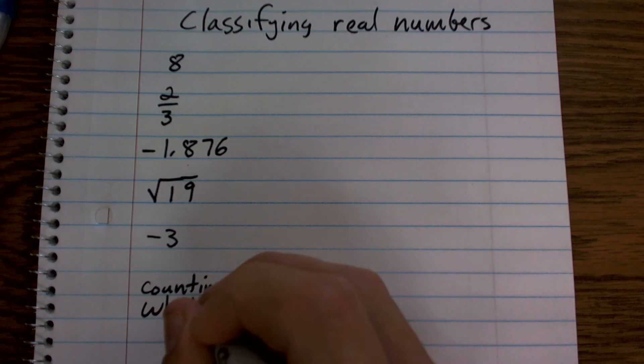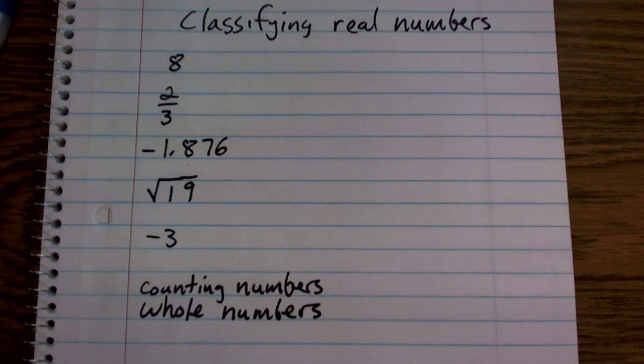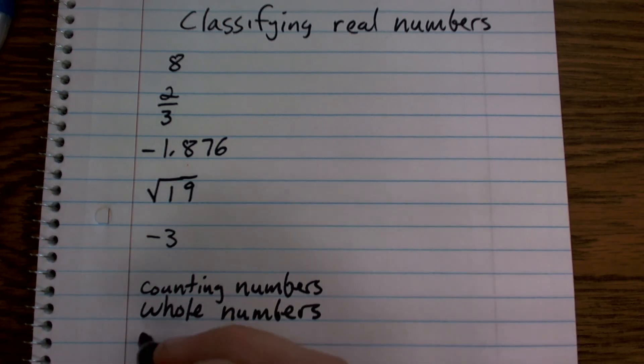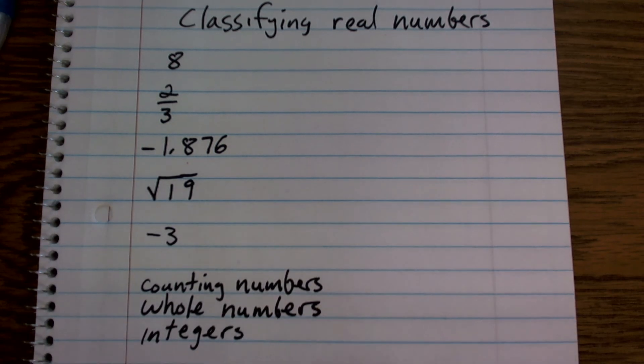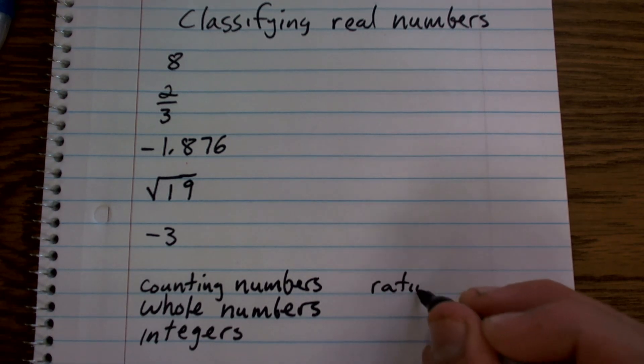Then we included 0 to give us whole numbers, right? Then after we include our whole numbers, we needed to include negative numbers, which gave us integers. And then after integers, there were still numbers that we could write as fractions. So we had rational numbers.